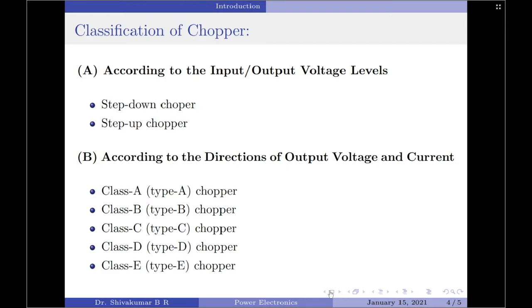Continuing, according to the directions of output voltage and current, choppers can be classified into 5 types: Class A or type A chopper, class B or type B chopper. Similarly, we have class C, D and class E chopper.